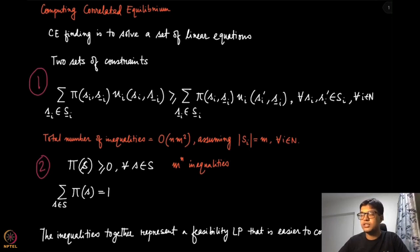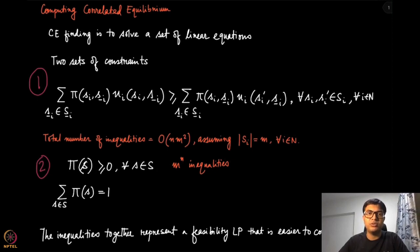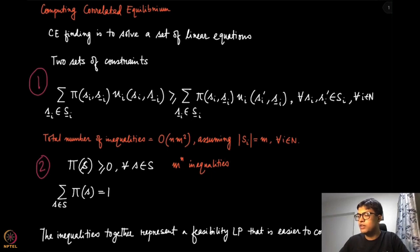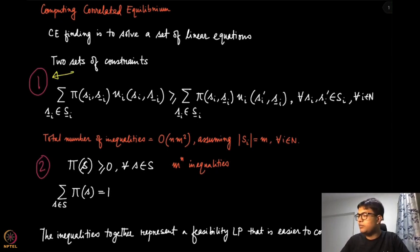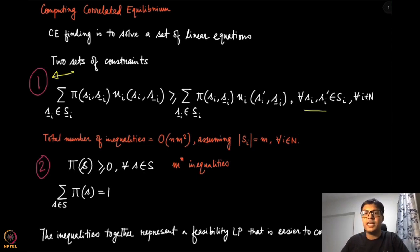Let us look at what set of inequalities and equalities we need to satisfy in order for a correlated strategy to be a correlated equilibrium. Condition one, written here, comes directly from first principles — it is just the definition of correlated equilibrium — and this inequality must be satisfied for every sᵢ, sᵢ', and for all players i in N.